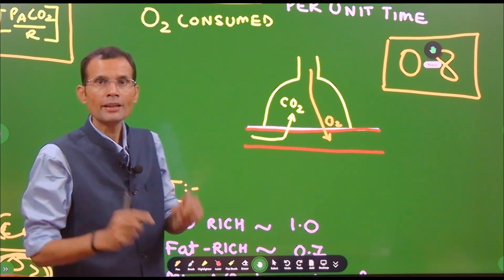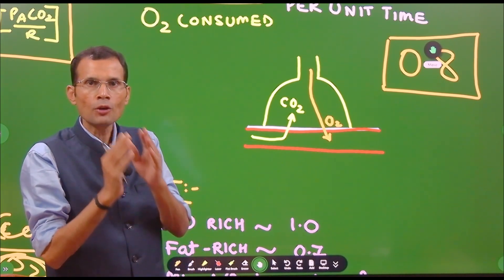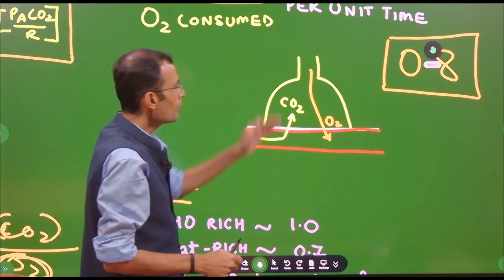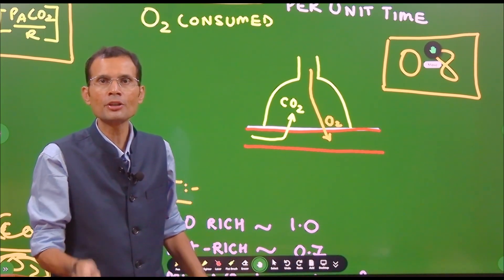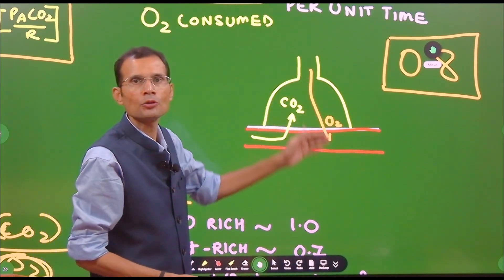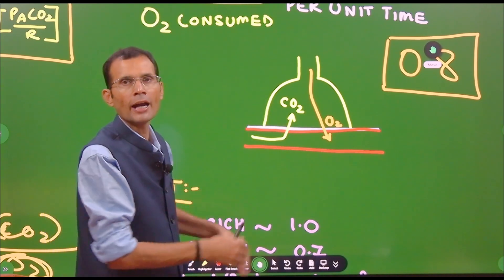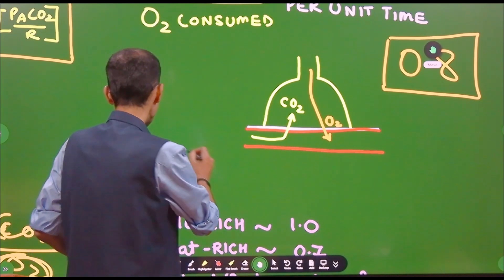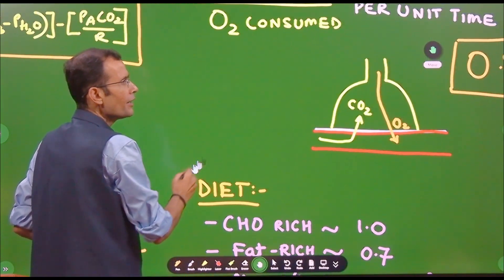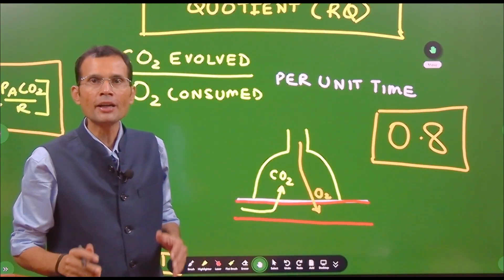Don't forget, we will be focusing at the alveolar level — how much oxygen is going in per unit time and how much CO2 is coming out and expelled per unit time. The normal value is 0.8.